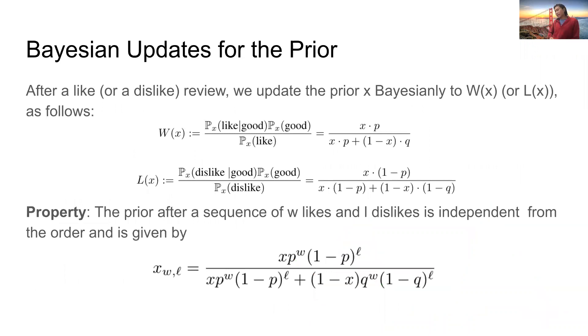After a like or a dislike from a buyer, both the buyers and the sellers can update the prior X in a Bayesian manner in the equations presented on this slide. We note an interesting property that the prior after a sequence of likes and dislikes in reviews is independent from the order and is given by the expression in this slide also.